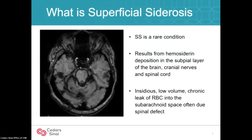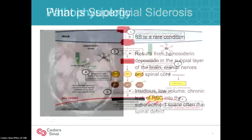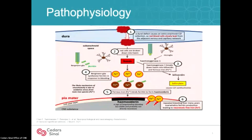It's thought to be due to an insidious, low-volume chronic leak of red blood cells into the subarachnoid space, and it's often due to a spinal defect. This schematic illustrates the pathophysiology: if a patient has a dural defect, red blood cells leak into the subarachnoid space where they are broken down to heme. This triggers the microglia to produce heme oxygenase-1, which breaks down the heme into ferrous iron — which is toxic — triggering Bergmann glia to produce ferritin, which binds that ferrous iron and produces the hemosiderin we see on imaging. Over time, with chronic leakage, the ferritin system becomes overwhelmed, leaving free iron that is neurotoxic and produces the symptoms we see.